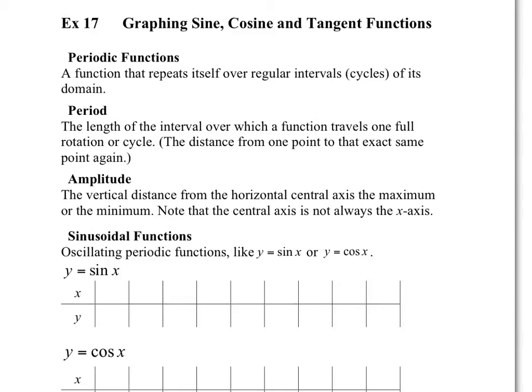Basically, things that can be represented by periodic functions — temperature is a good example. Every year we come back to the same average temperature in June and the same average temperature in August. It oscillates: it goes up to a higher degree in July, and it goes down to a lower degree in January, and so on and so forth.